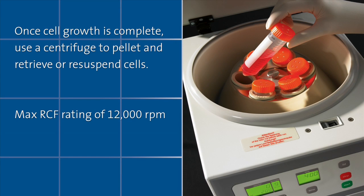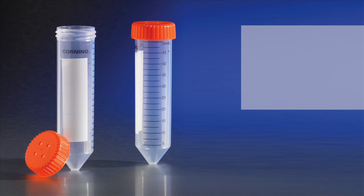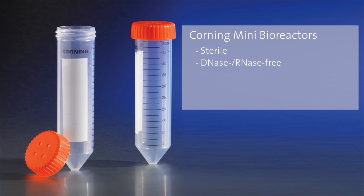Once cell growth is complete, take the tube and place it directly into a centrifuge to pellet and retrieve or resuspend cells. The mini bioreactor is sterile, DNase and RNase free, and non-pyrogenic. These tubes can be used in standard rotors.